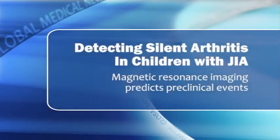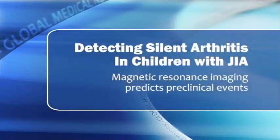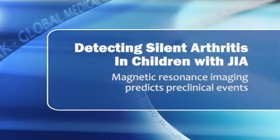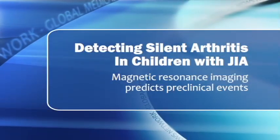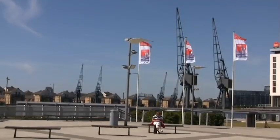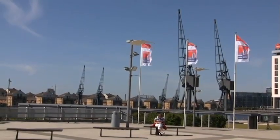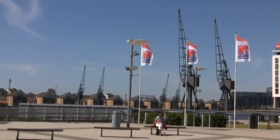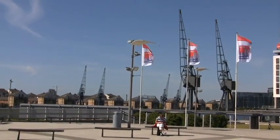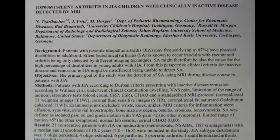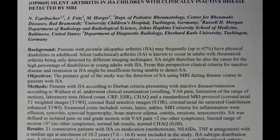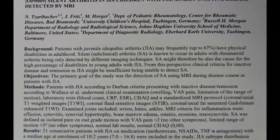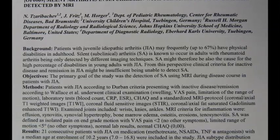Magnetic resonance imaging can successfully identify subclinical arthritis in children with juvenile idiopathic arthritis, according to Dr. Nikolai Zaribachev. In his study of 21 children, MRI identified 29 silent arthritis events. These events were later followed by clinical activity.